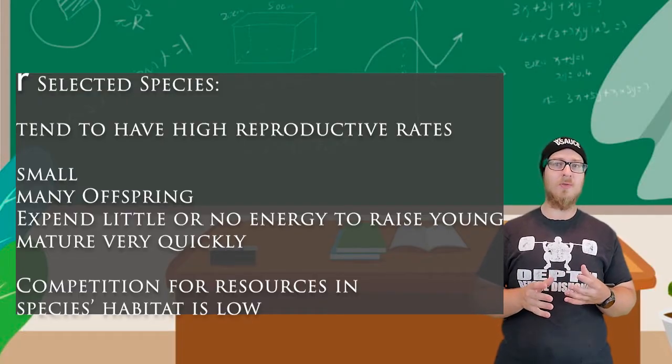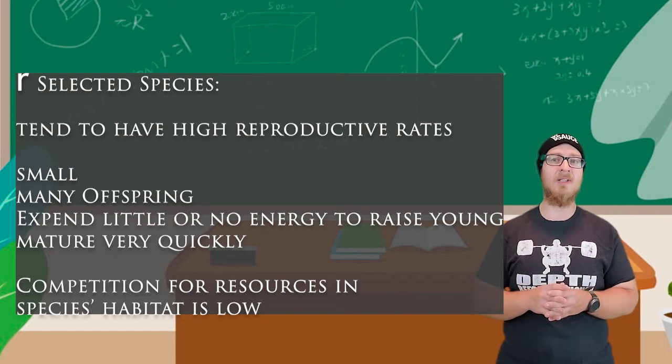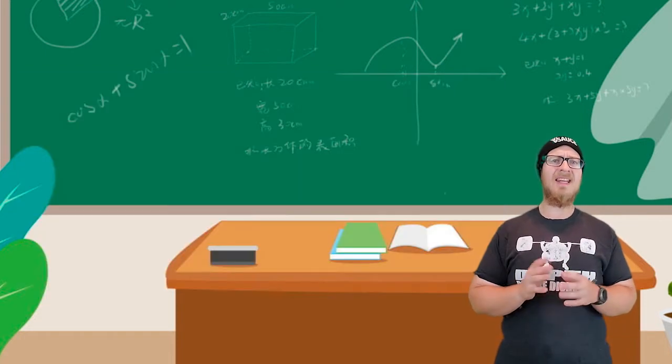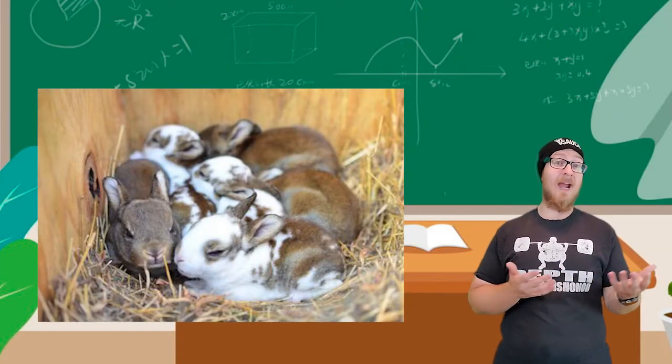Competition for resources in R-selected species' habitats is typically relatively low. An example of an R-selected species is rabbit.